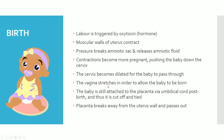Once the fetus has developed to a certain point, labour is triggered by the oxytocin hormone. The muscular walls of the uterus contract, and that contraction breaks the amniotic sac, releasing the amniotic fluid. The contractions become more frequent and essentially push the baby physically down through the cervix. The cervix becomes dilated, along with the vagina, so the baby can pass through. Once the baby is out, it's still attached to the placenta via the umbilical cord. The doctors cut and tie the umbilical cord — that becomes our belly button — and the placenta naturally breaks away from the uterus wall and passes out through the vagina.